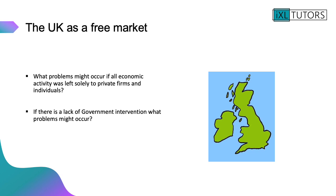Let's bring this back to the UK and think about these two questions. If the UK was a free market, what problems might occur if all economic activity was left solely to private firms and private individuals? And secondly, if there's a lack of government intervention, what problems might occur? Pause here — this should take you about three to four minutes to jot down your ideas.